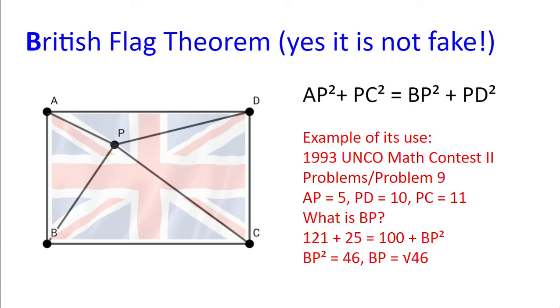BP will be the square root of 46. Why? Because we get 121 plus 25 equals 100 plus BP squared and BP squared equals 46.